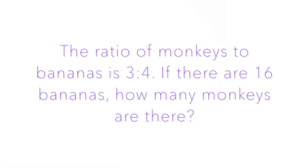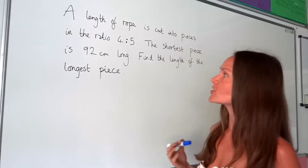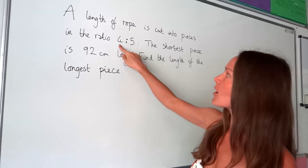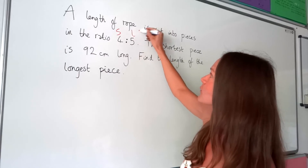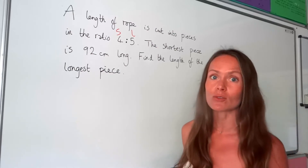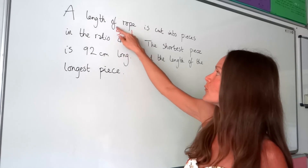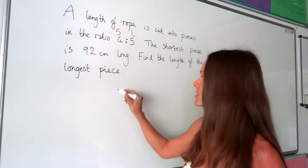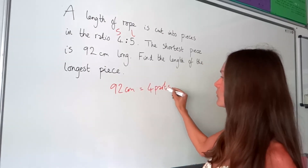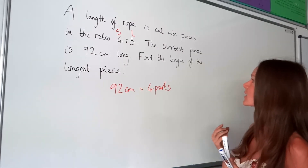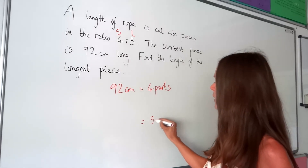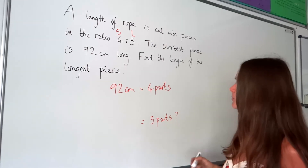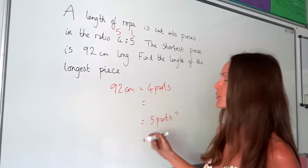Here we've got a length of rope cut into pieces in the ratio four to five. The smaller number is the shorter part - I'll call it S - and the larger number is the longer part - I'll call it L. The shortest piece is 92 centimeters long. Looking at the ratio, the shorter piece is equal to four parts, so 92 centimeters equals four parts. We have to work out the length of the longest piece, which is five parts in the ratio.